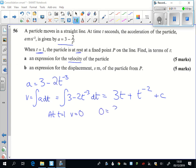So we can find out now by putting the 1 into all of that, we can find out that c has to be minus 4. And so our velocity is 3t plus t to the power of minus 2 minus 4.